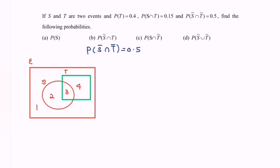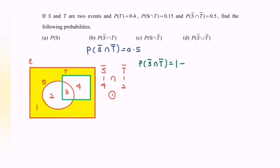Referring to the diagram: S complement is outside S, which covers regions 1 and 4. T complement is outside T, which covers regions 1 and 2. Their intersection gives region 1. So the formula is: P(S'∩T') = 1 minus P(S∪T). Substituting 0.5 = 1 − P(S∪T), and rearranging, we get P(S∪T) = 0.5.